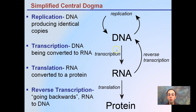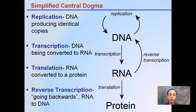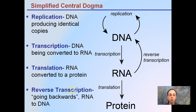Transcription is DNA being converted to RNA. The opposite of that we call reverse transcription — going from RNA to DNA. Some viruses may do this, and telomerases at the end of our chromosomes also go through reverse transcription. Translation — think of translating a different language — is the conversion of RNA to a protein. Reverse transcription is basically going backwards.